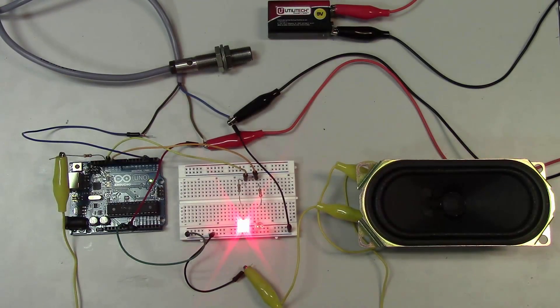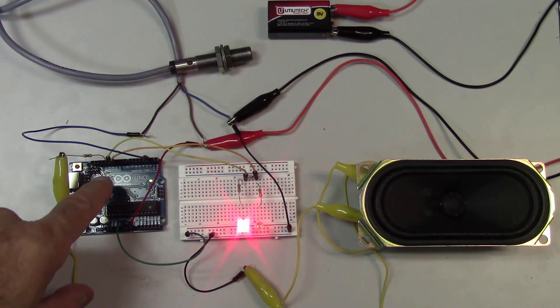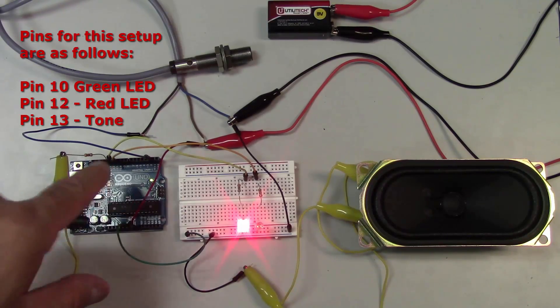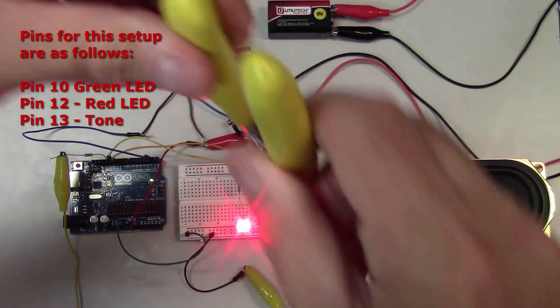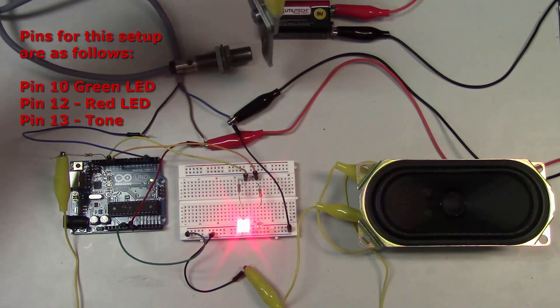So I wrote some code to handle this. By the way as far as my outputs go I'm using pins 10 and 11 to output to LEDs and I've got one red LED and one green LED and my green LED tells me when the sensor is activated and my red LED tells me when it's not activated.